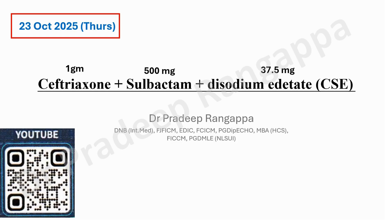If you look at the positioning of sulbactam as an antibiotic for resistant Acinetobacter, the IDSA guidelines place sulbactam at the forefront for treatment of Acinetobacter — at a very high dose. We give three grams six-hourly. So 500 milligrams as an adjunct to ceftriaxone — how effective that would be is something one has to ponder.